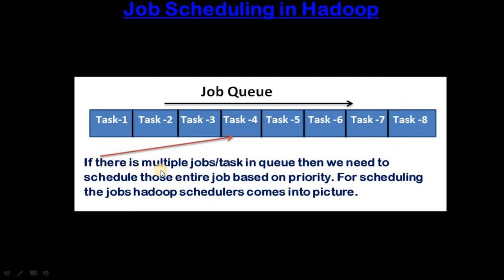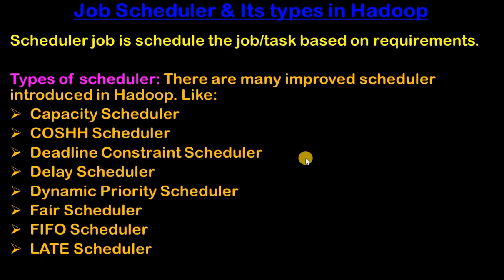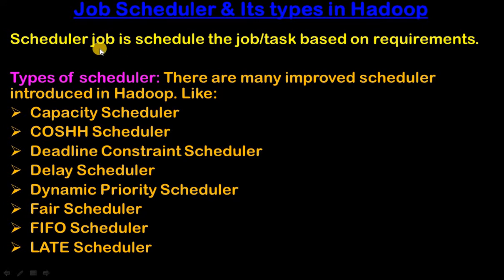First we are going to see job scheduling in Hadoop. As we can see in this diagram, if there are multiple job tasks in the queue, then we need to schedule those jobs based on priority. For scheduling the jobs, Hadoop schedulers come into picture. If there are multiple jobs, we can schedule those jobs using a scheduler and set their priority.